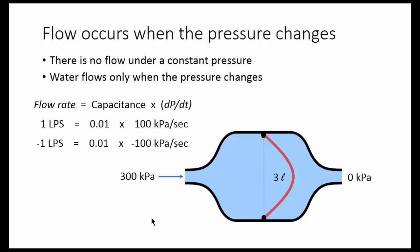If you reduce the pressure, you get the opposite effect. If you decrease the pressure at a rate of 100 kilopascals per second, you'll get a flow in the opposite direction of 1 liter per second. That's minus 1 liter per second.